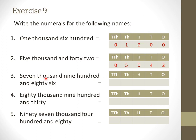Next is seven thousand nine hundred and eighty-six. How many thousands do we have? Seven thousands — so under the thousands section I will write 7. Next is nine hundred — under the hundreds section I will write 9. Next is eighty-six — I will write 8 and 6 under the tens and ones sections. So the answer is seven thousand nine hundred and eighty-six — 7,986.